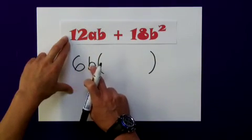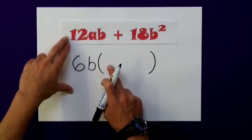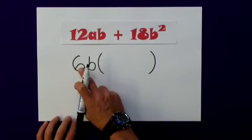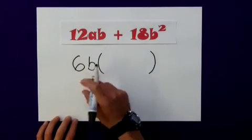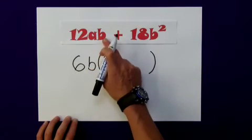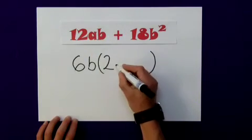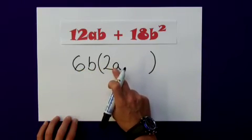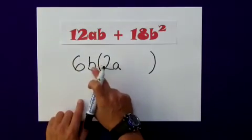So 6b multiplied by something has to give me 12ab back. Well, if I consider the 6 to 12, I need to double that. So that would be the 2. The b already exists here and here. So I need to multiply it by a. So 6b multiplied by 2a would give me 12ab.